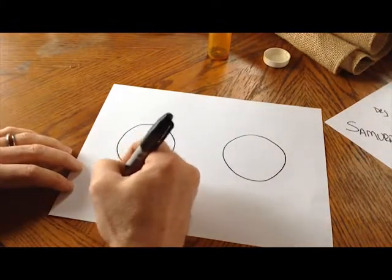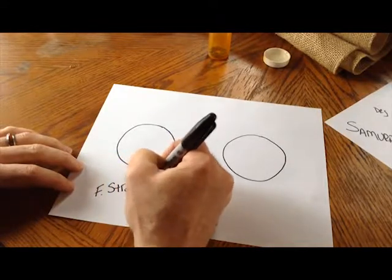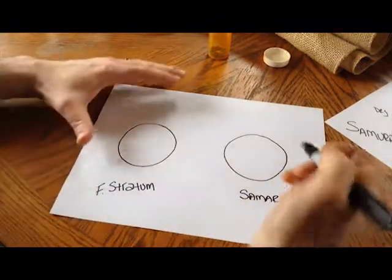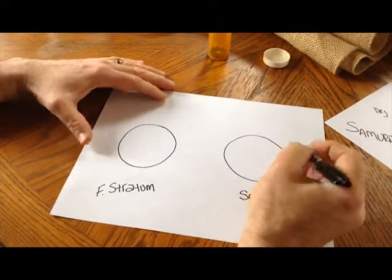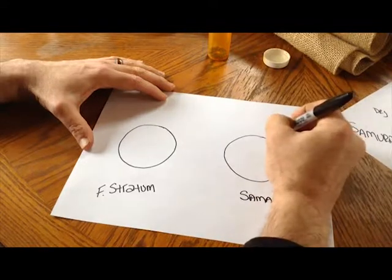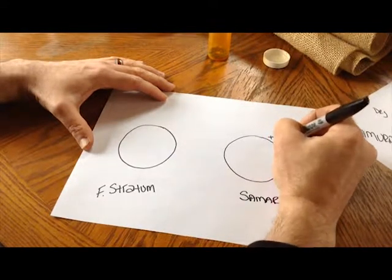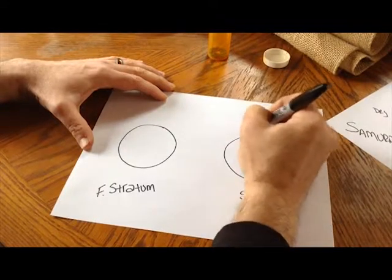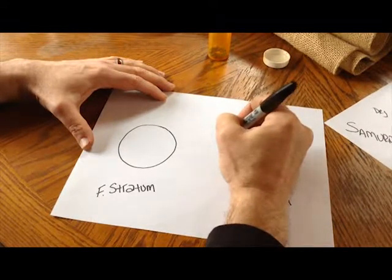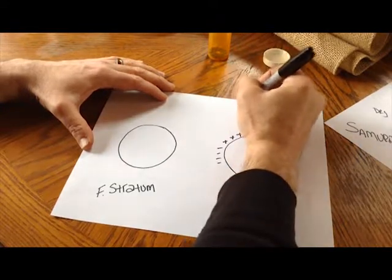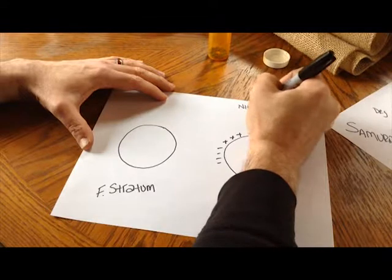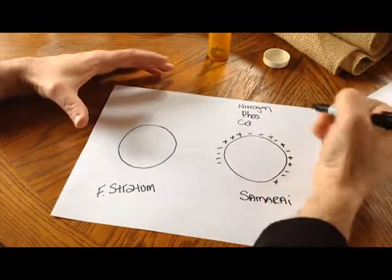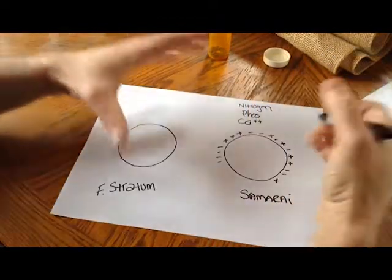If we call this Fluval Stratum and this is Samurai, looking at the structure what you want is a surface area that can hold negatively and positively charged particles or ions to its surface. The reason being is this is where such things as the nitrogen, phosphorus, calciums, all of the stuff that you use is going to bond to the surface.